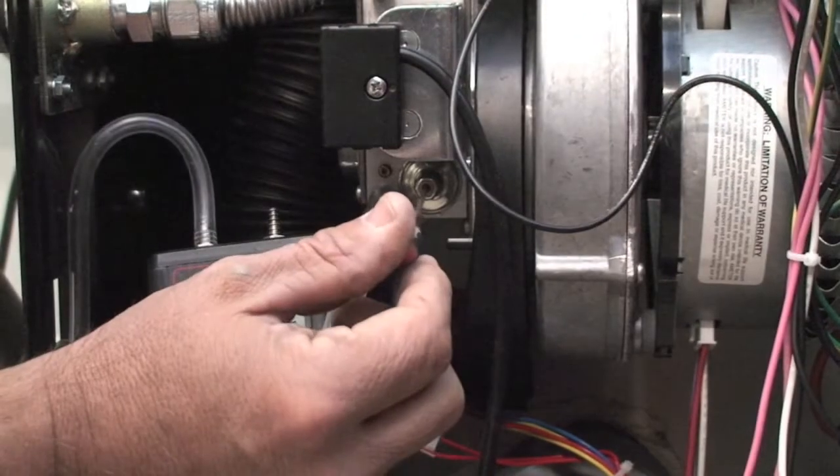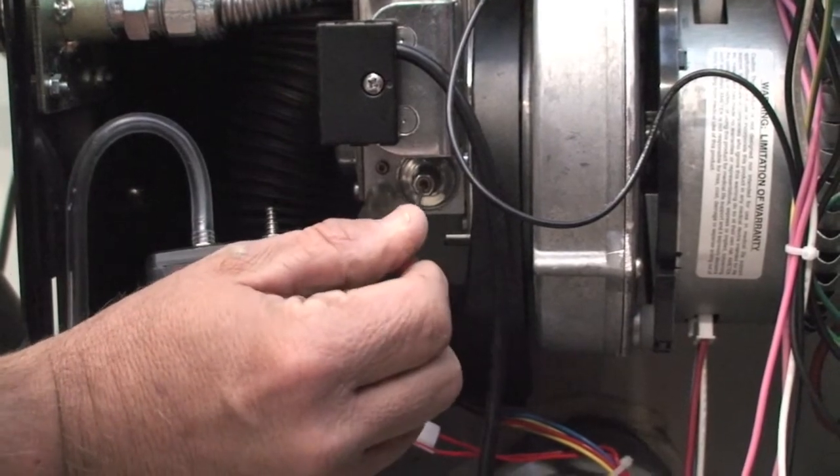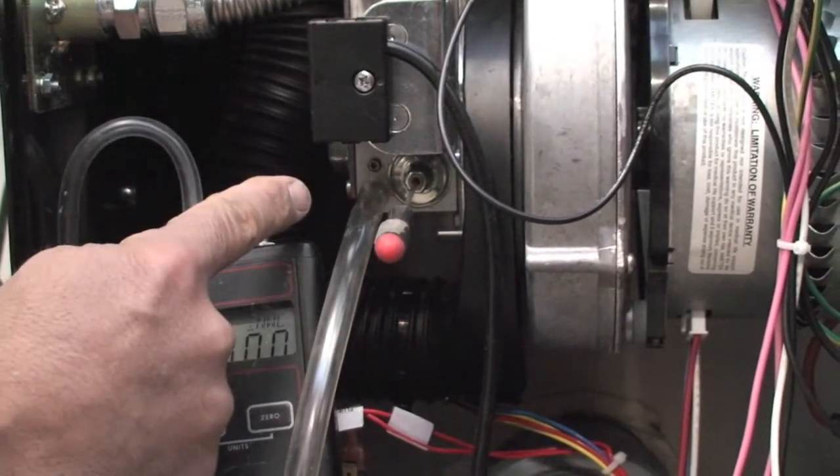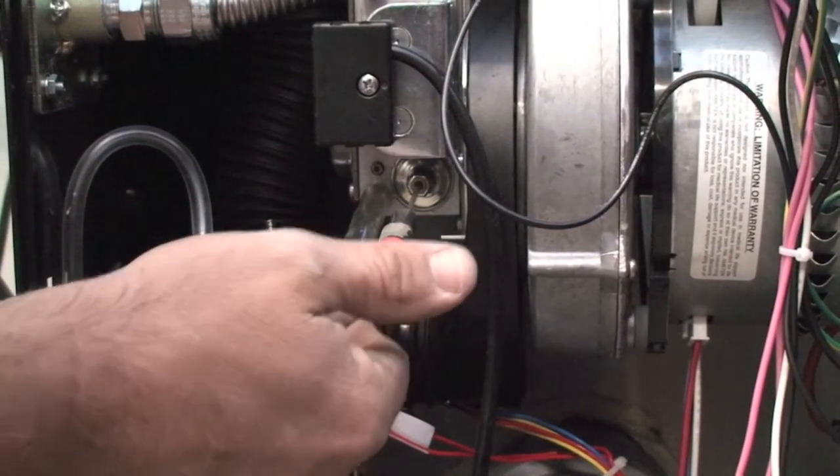To raise combustion levels or bring manifold pressure towards positive, turn 2 mm Allen screw clockwise. To adjust combustion levels down or bring manifold pressure negative, turn 2 mm Allen screw counterclockwise in very small increments.